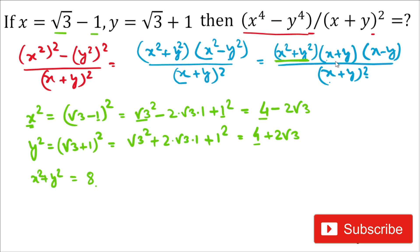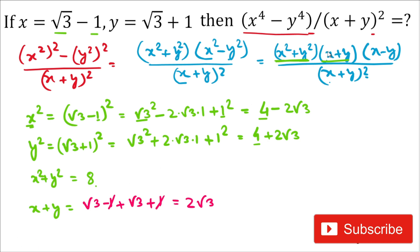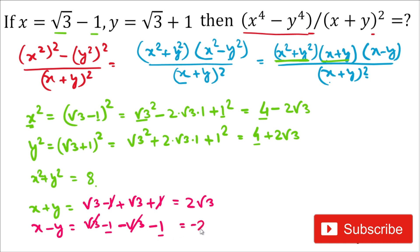Next, we calculate x+y. Adding x and y: (√3−1)+(√3+1). The −1 and +1 cancel, leaving √3+√3 = 2√3. So x+y = 2√3. For x−y: (√3−1) minus (√3+1) = √3−1−√3−1. The √3 terms cancel, giving −1−1 = −2. So x−y = −2.